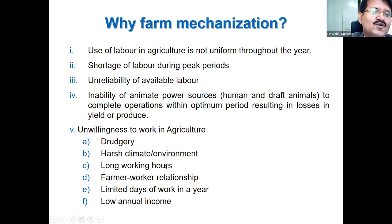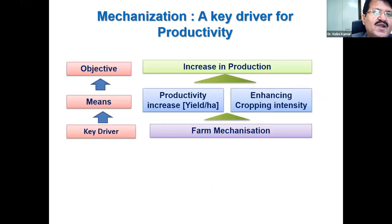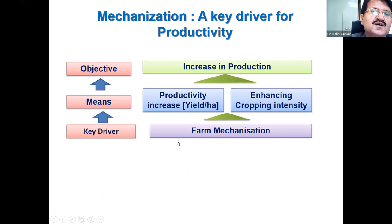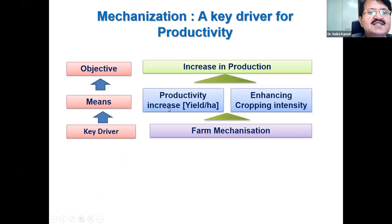All these problems can be reduced with the use of farm machinery. Therefore, mechanization is a must in Indian agriculture to improve the environment. Mechanization is also a key driver of productivity — it increases productivity as well as enhancing cropping intensity.